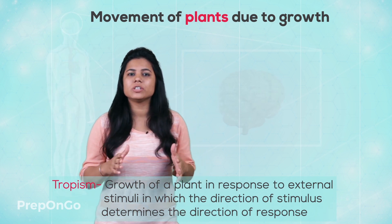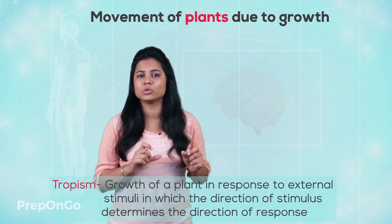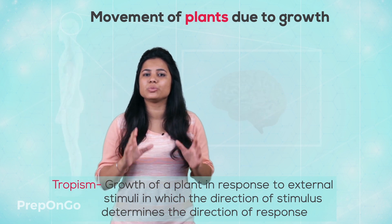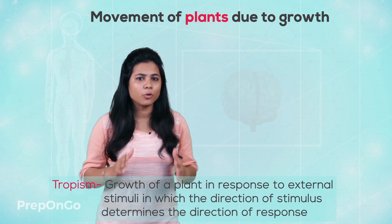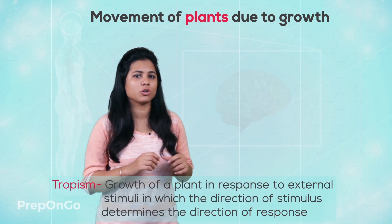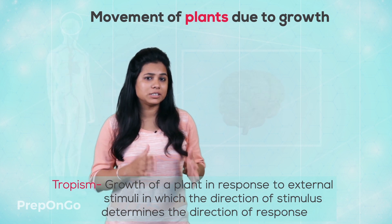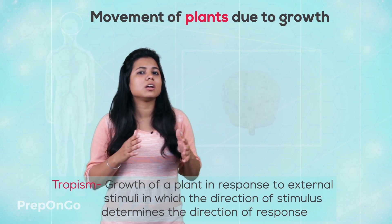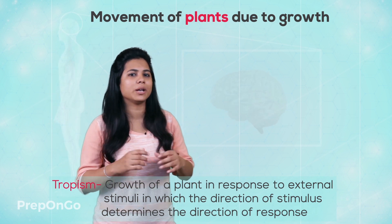This tropism, or movement due to growth, is very slow. There are four agents that affect tropism. Let's see these tropism-affecting agents one by one.